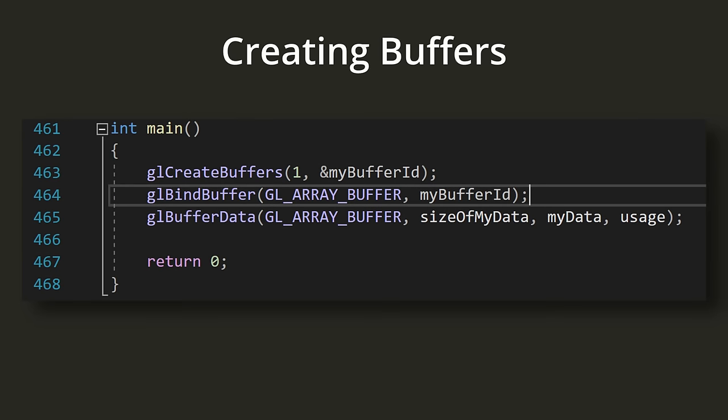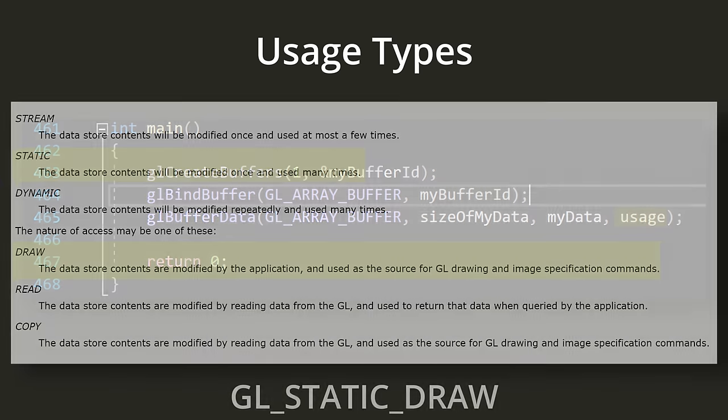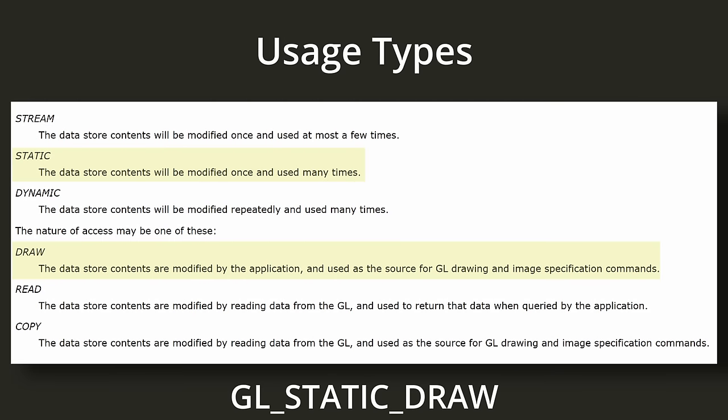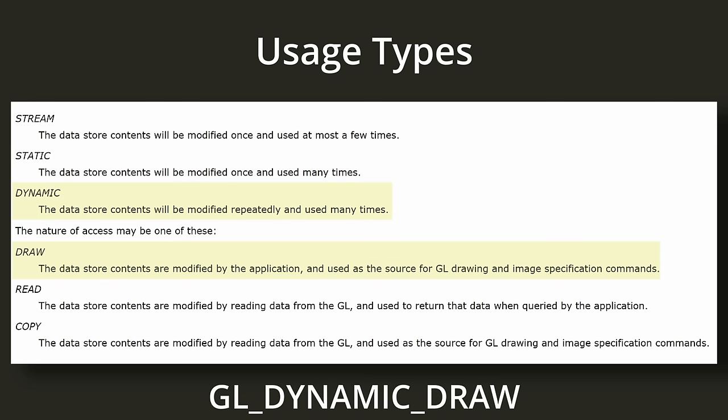There's a parameter at the end of these calls called usage. We can help OpenGL out by letting it know what we intend to do with this data. If we intend to send this data to the GPU and never touch it again, we can use GLStaticDraw. If we intend to update this data commonly and never read it, we can use GLDynamicDraw. There are a few other usage types in the documentation as well.